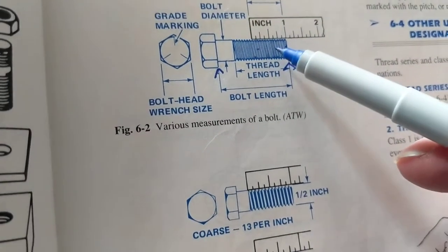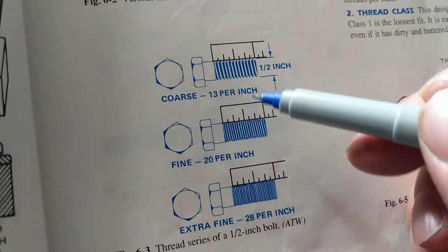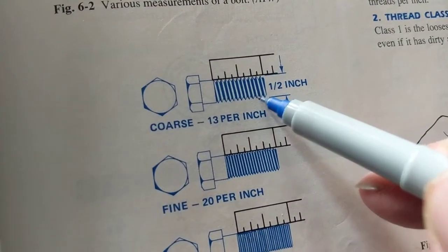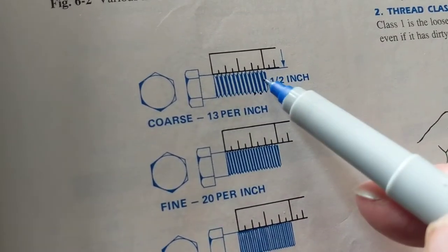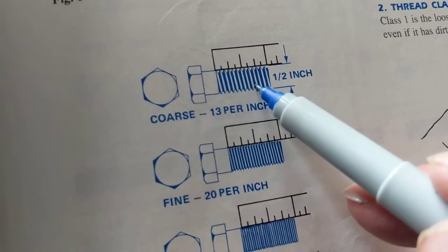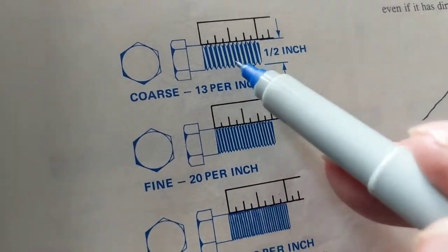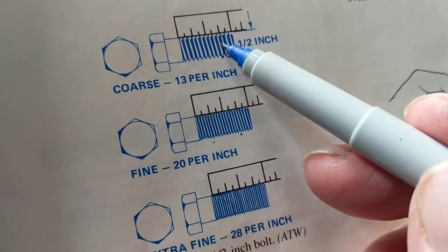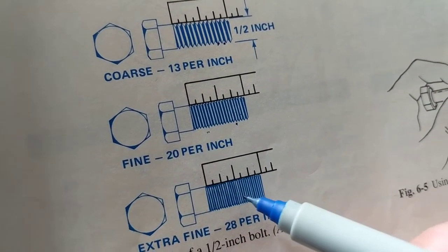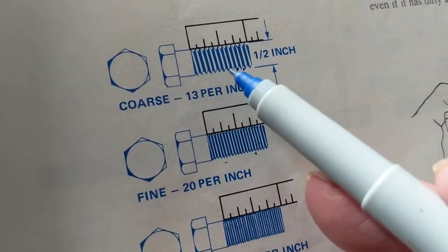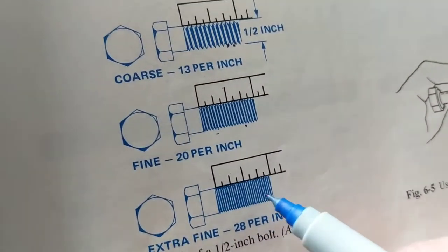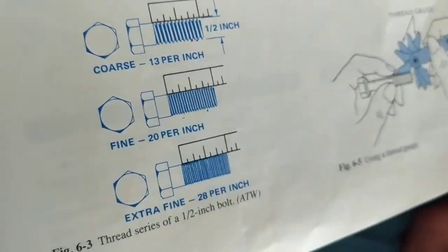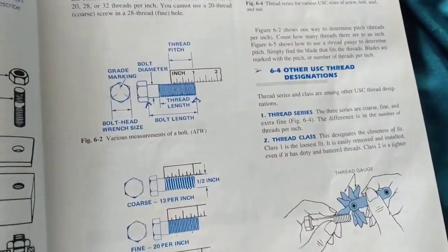Now let's elaborate. Here's the same bolt — from here to here is a half inch. This is called coarse: for one inch, the threads are close but not as close as a fine one. Now you see the threads getting closer — we can even go to extra fine. Compare all of them: this has 13 threads per inch, this has 20, this has 28 — double the threads of the first one. Which is more secure? This one, obviously.